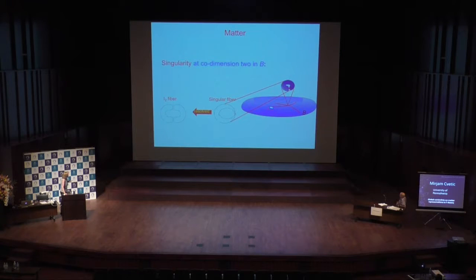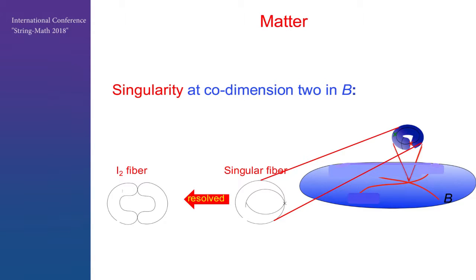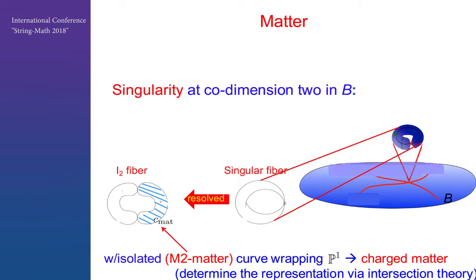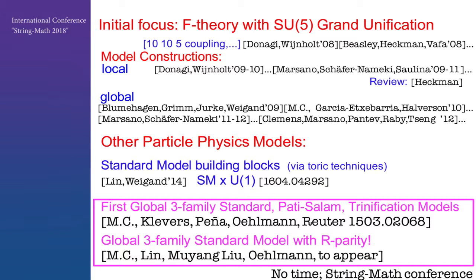When two non-abelian divisors intersect, we have a co-dimension two singularity. We blow up the fiber — the fiber is generally an I2 fiber — and it is wrapped with an analog of an M2 membrane curve that wraps a particular P1 in this I2 fiber. One can determine the corresponding representation of the non-abelian gauge symmetry of this matter by employing the intersection theory of the membrane curve with the resolved I2 fiber. With these building blocks, one motivated the study of globally consistent F-theory compactifications, in particular for SU(5) grand unification, because it also led to a naturally occurring coupling of the matter representation describing the heaviest quark — namely the top quark.